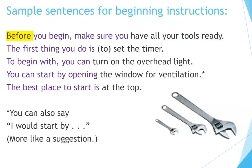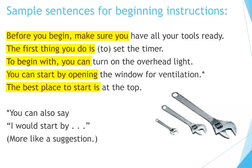Sample sentences for beginning instructions: 'Before you begin, make sure you have all your tools ready.' 'The first thing you do is set the timer.' 'To begin with, you can turn on the overhead light.' 'You can start by opening the window for ventilation.' 'The best place to start is at the top.' You can also say 'I would start by...' — this is more like a suggestion.